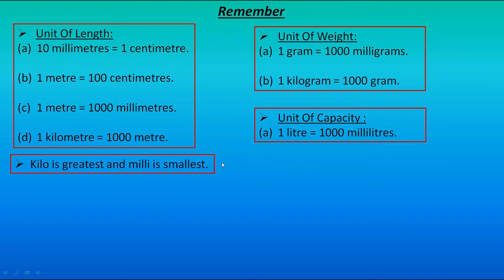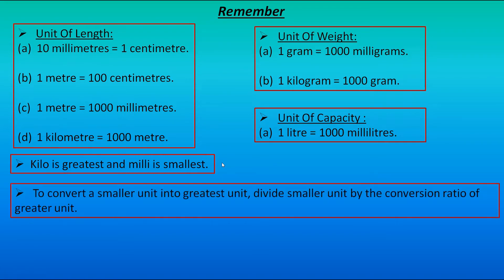The next point is: to convert a smaller unit into a greater unit, divide the smaller unit by the conversion ratio of the greater unit. That means whenever you have a value in a smaller unit, say meters, and you have to convert it into a greater unit, say kilometers, you divide the smaller unit by the conversion ratio. Here, the conversion ratio is 1000, so we divide the value in meters by 1000 to convert it into kilometers.